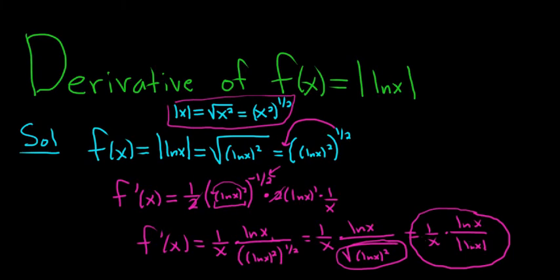There are some restrictions here. For one, x can't be zero, but that's a restriction on the natural log itself — the domain of the natural log is zero to infinity, not including zero. But also the natural log itself can't equal zero, so ln x is not equal to zero, which means x is not equal to one, because the natural log of one is zero. I hope this video has been helpful.